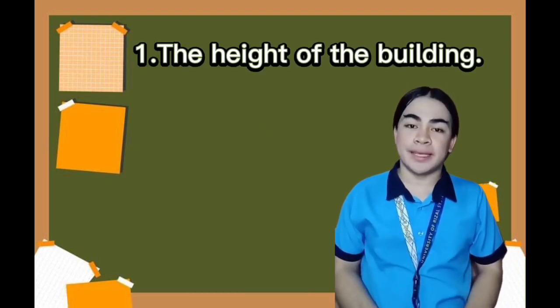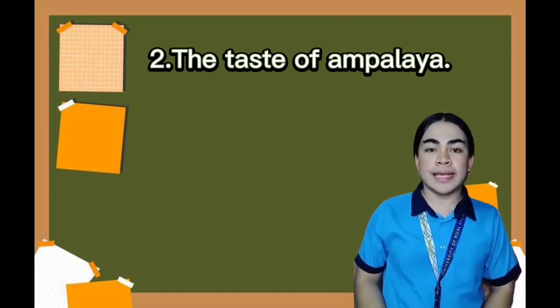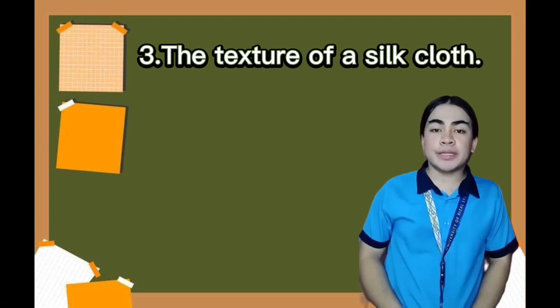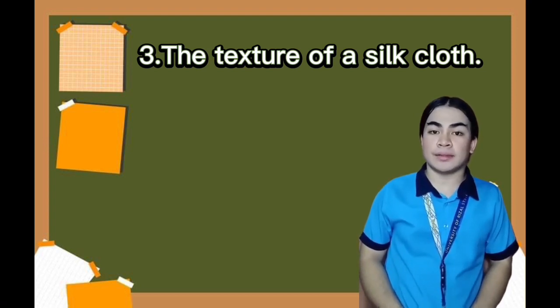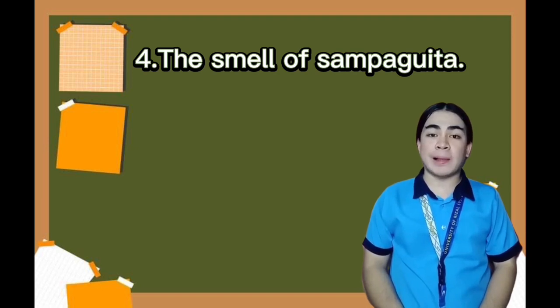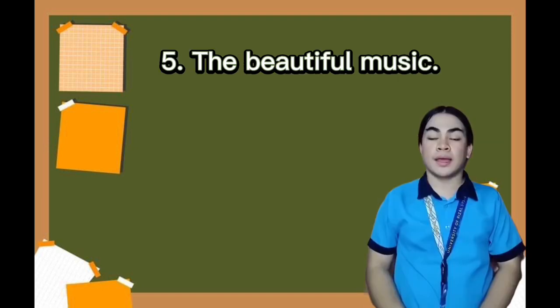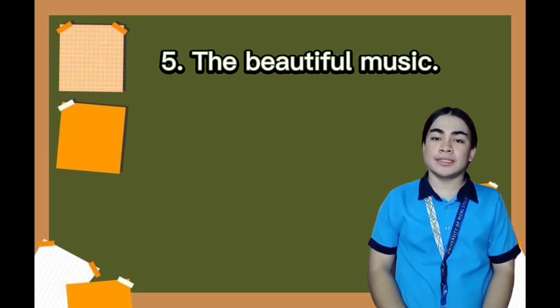Now that we are done with the activity, it's time for your quiz. Bring out your paper and pencil and number it one to five. Direction: tell which sense organ you will use to describe the following. Number one — the height of the building. Number two — the taste of ampalaya. Number three — the texture of the silk cloth. Number four — the smell of sampaguita. Number five — the beautiful music.